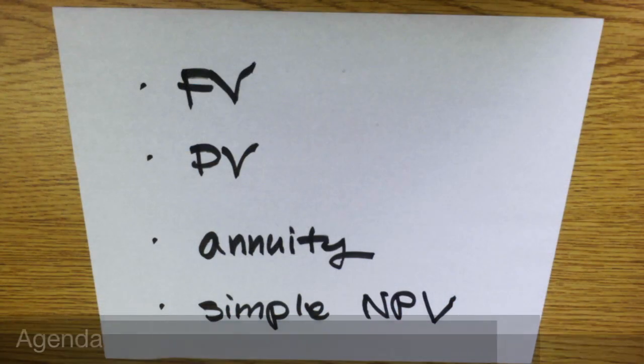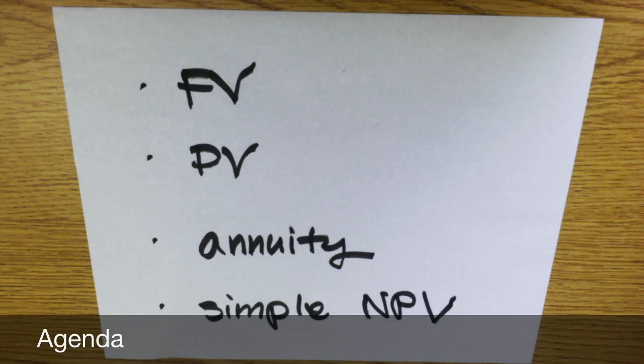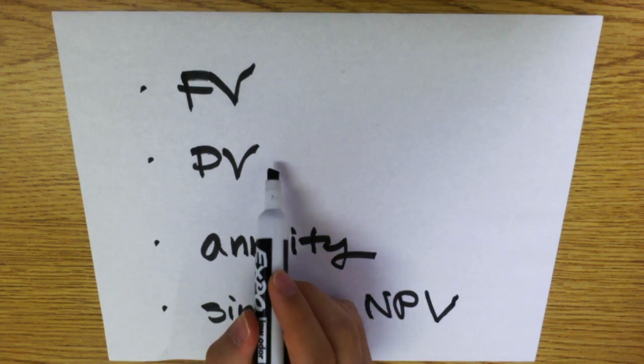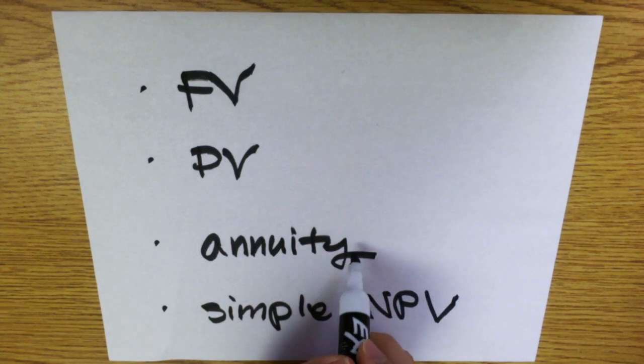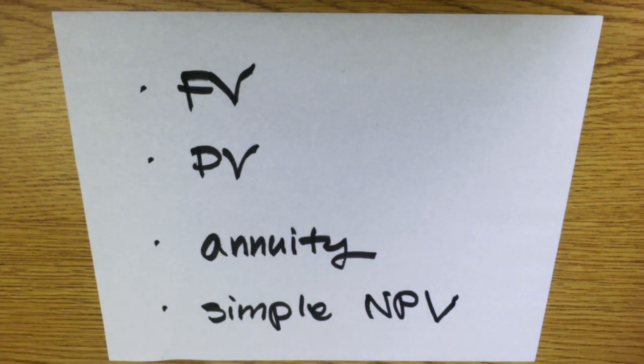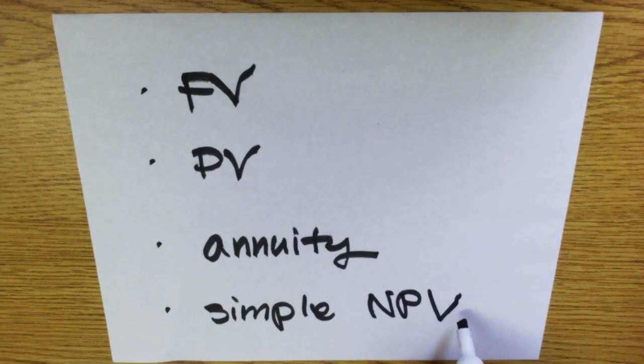For today's tutorial I will cover four topics. First is future value calculation, and then present value calculation, and then calculations of annuities. Annuities are a series of cash flows that are equal in amount for a fixed period. And then lastly I will cover simple NPV calculation. NPV stands for net present value, so it's different amounts, a series of different amounts of cash flows within a fixed period that you want to calculate the present value of.